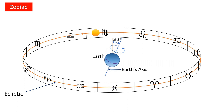Earth also orbits around the Sun and completes one full rotation in about 365 days. From Earth, the Sun appears to pass through these 12 signs over the course of 365 days, or a year. The zodiac is a 360-degree circle, so the Sun takes about 30 days, or one solar month, to cover one sign in the zodiac. Each of these solar months is named after each zodiac sign.